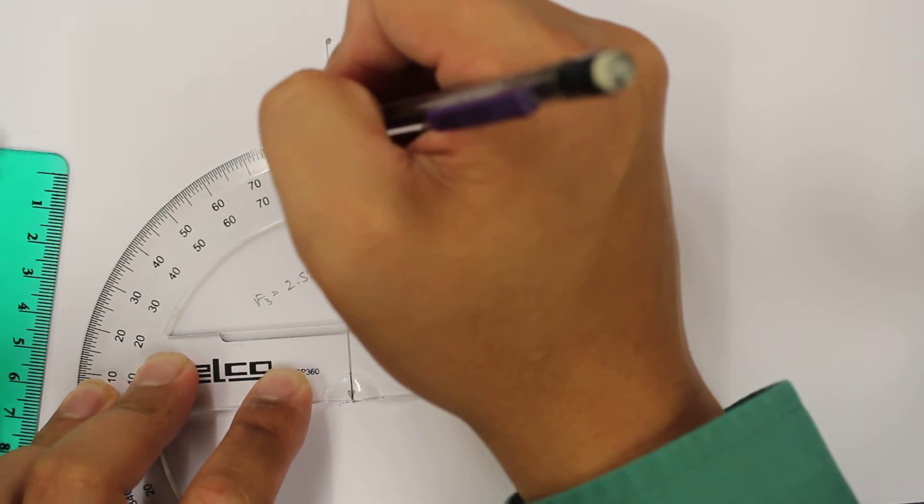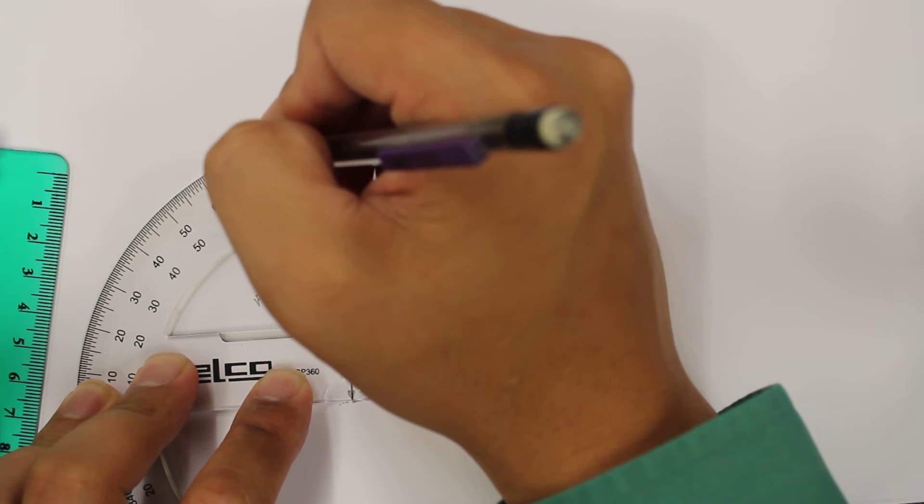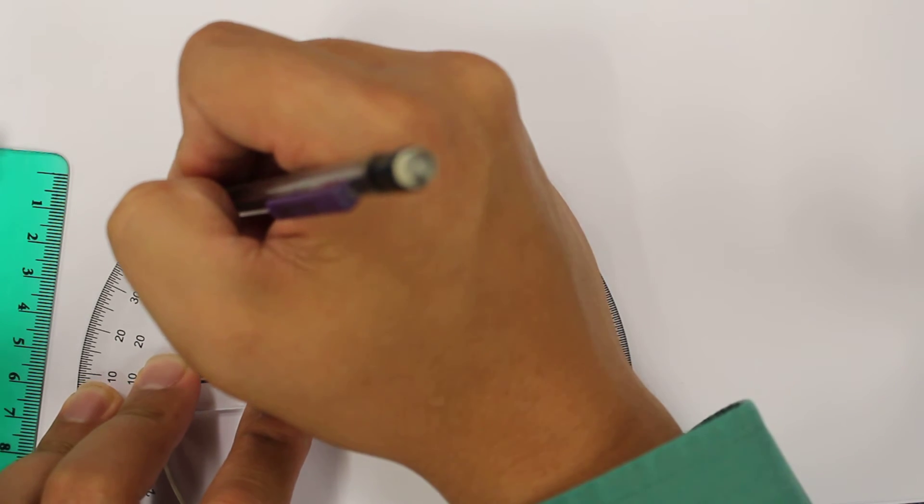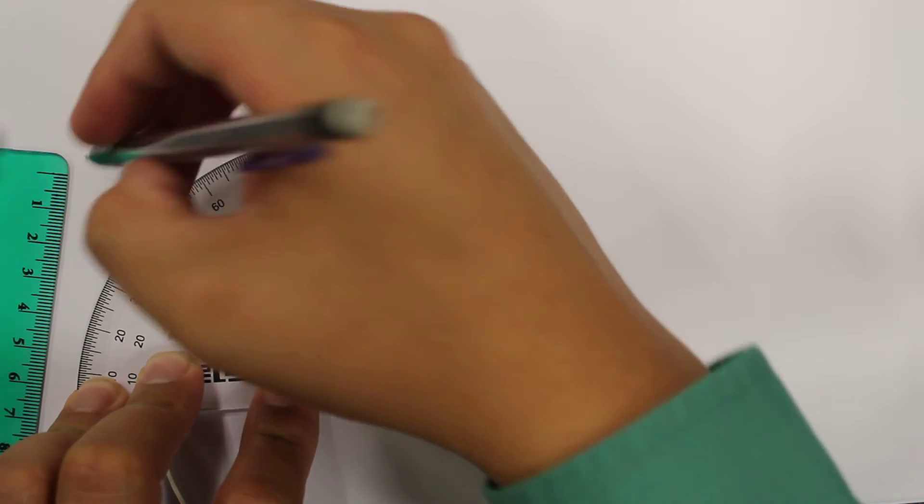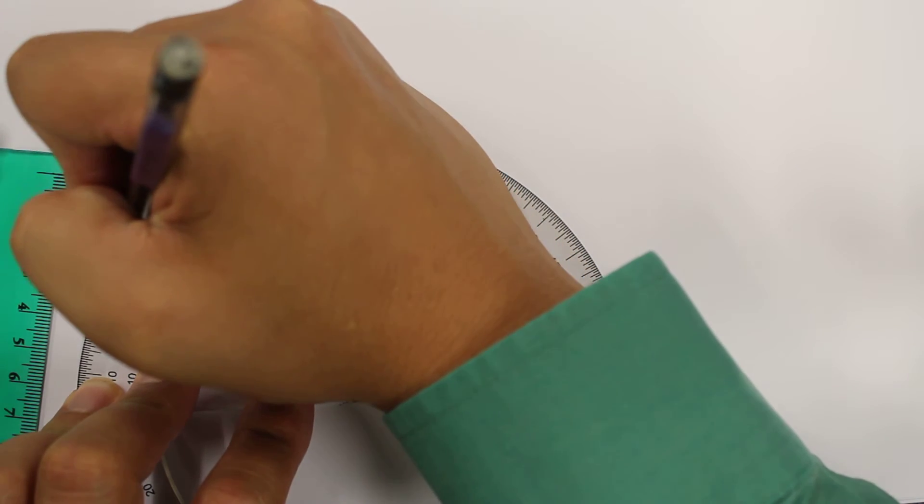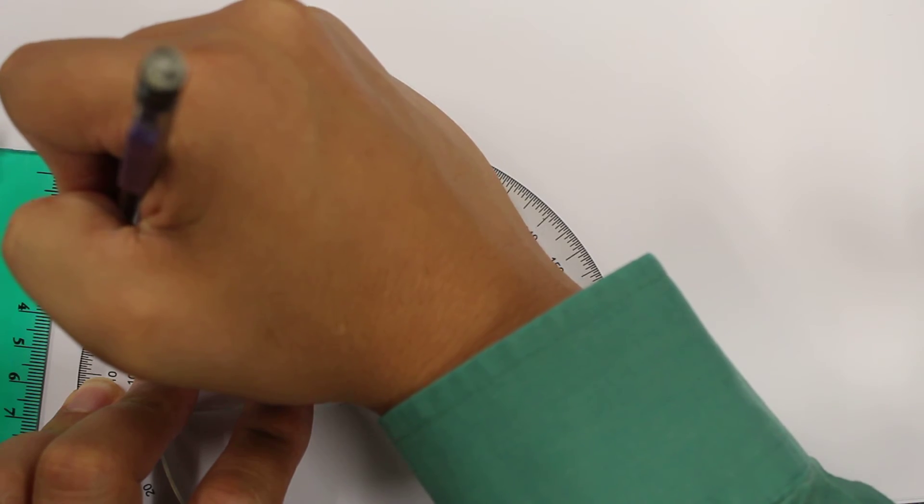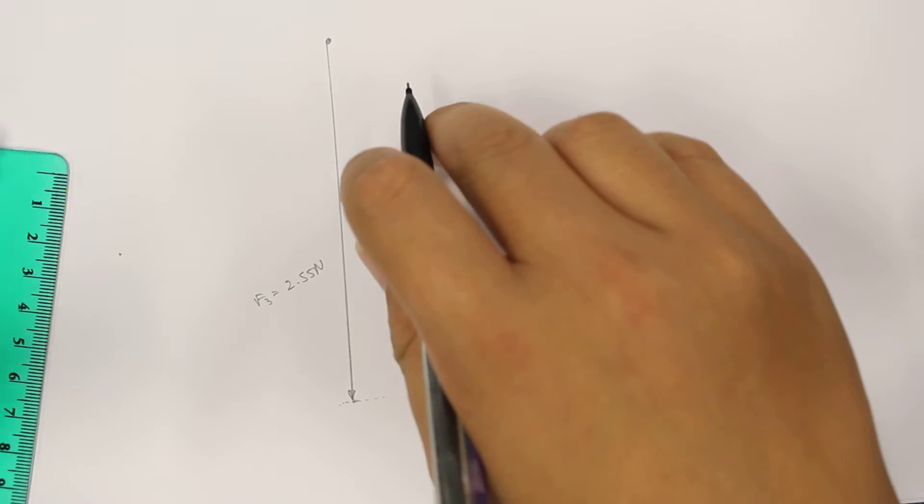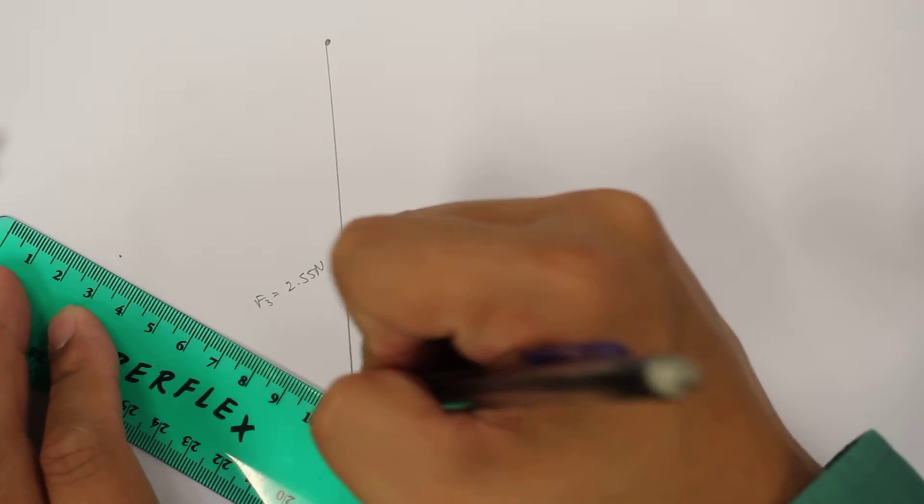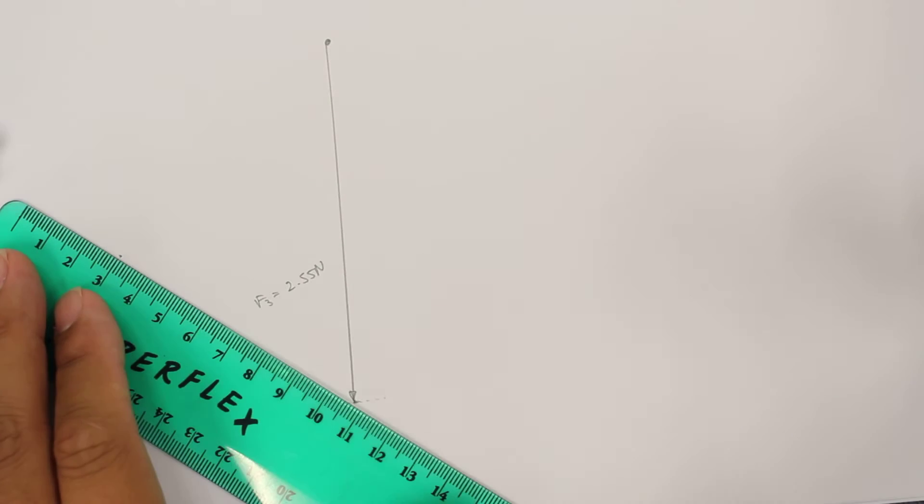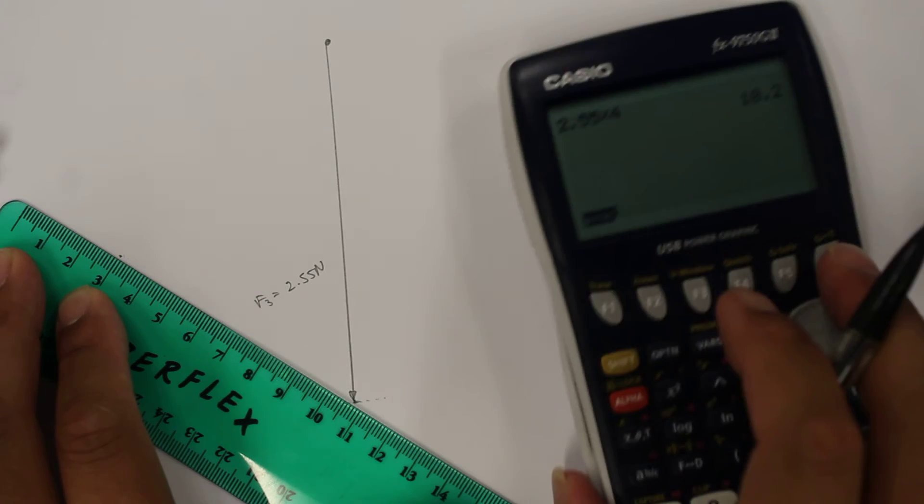So 90, 100, 110, 120, 130, 140. So 143.5 is one, two, three, around about here. Okay, so now what we can do is draw a line that starts from this position and goes towards that direction.